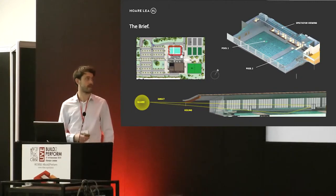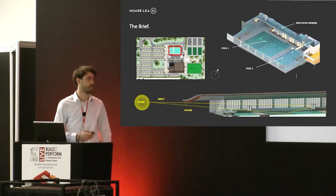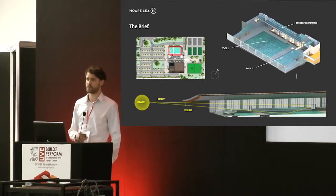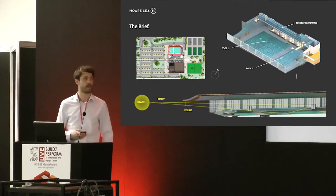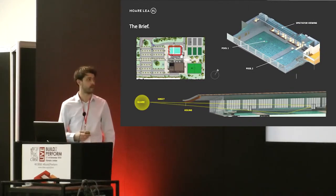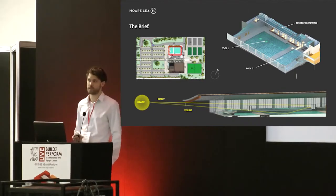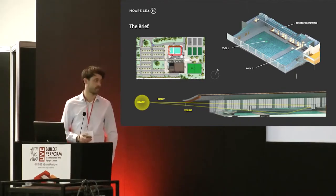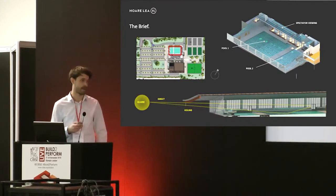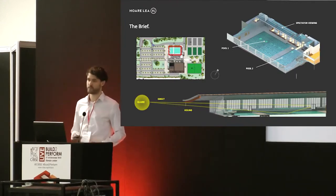The pool halls had a glazed southwest and northwest facade. The southwest facade was actually quite well protected by the large roof overhang. Within the pool we had two pools and a spectator viewing area. What we wanted to understand was the likelihood of glare happening within the pool — not only direct glare but also veiling glare, so reflection off of the surfaces of the pool.